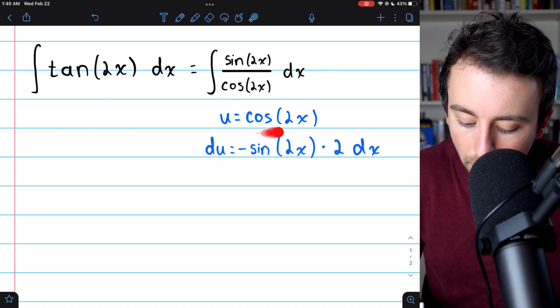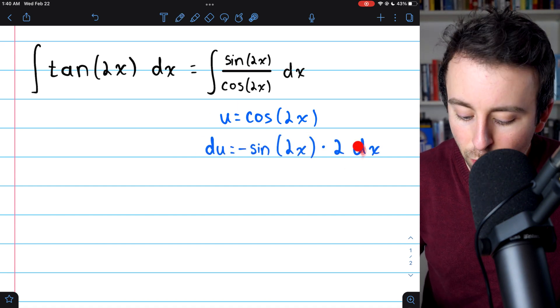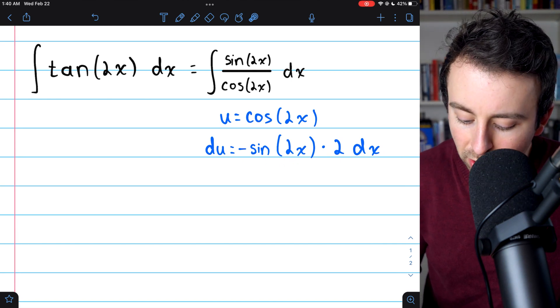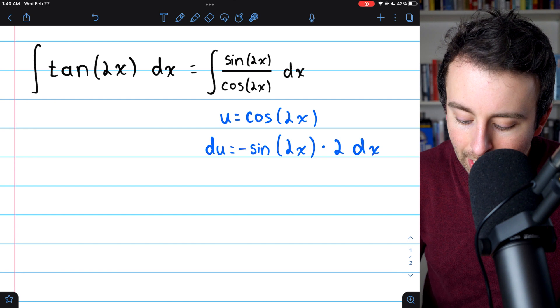We see letting u equal cosine of 2x, and then taking the derivative, du is negative sine of 2x multiplied by 2, because of the chain rule, and of course, dx.